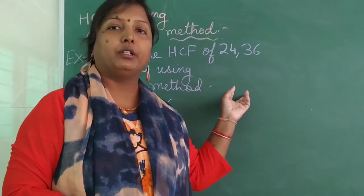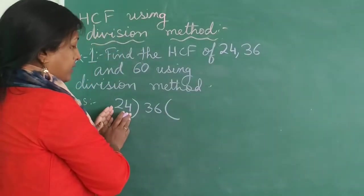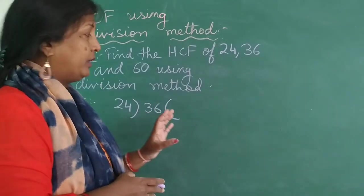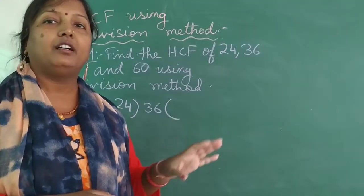Now children, when you take any two numbers, remember that the smaller number should be made the divisor and the bigger number should be kept in as a dividend. So we take the smaller number as divisor and the bigger number as the dividend.